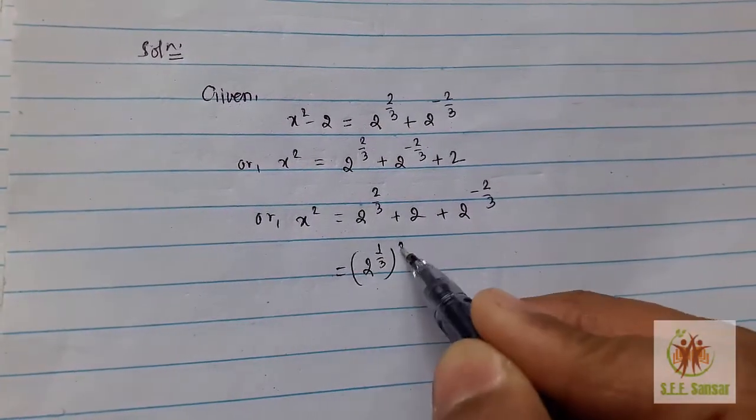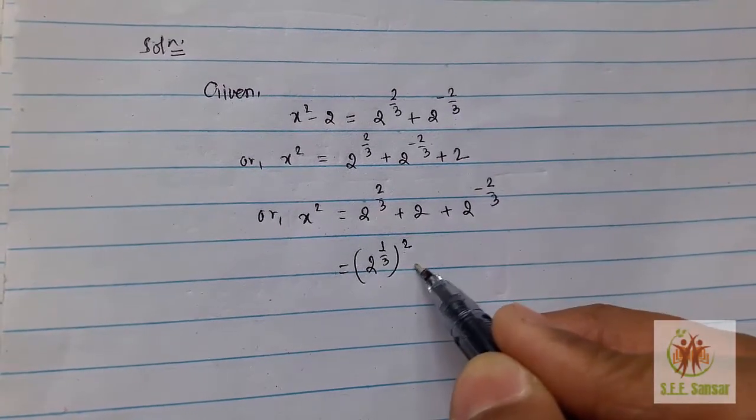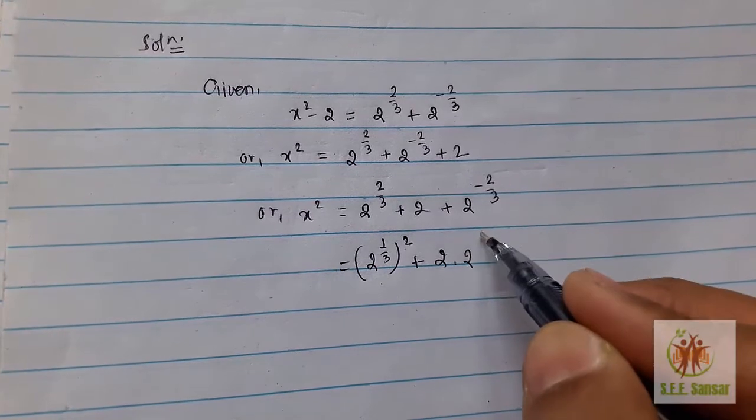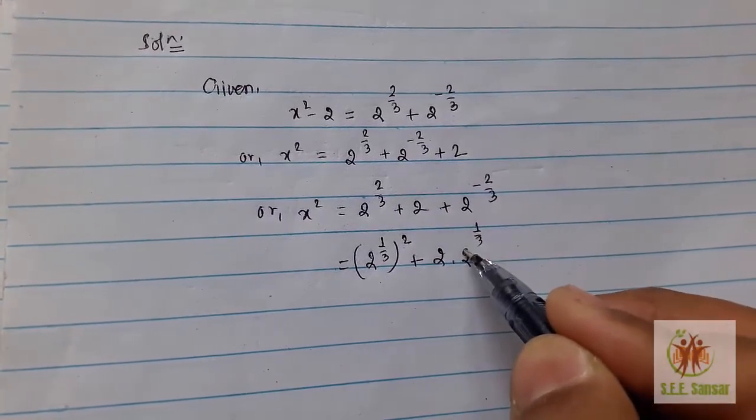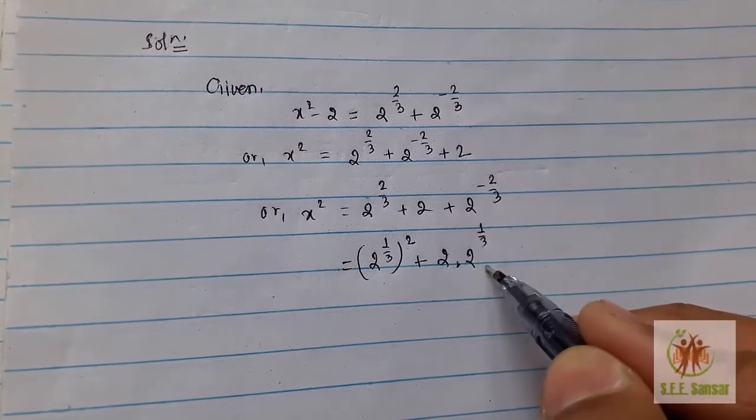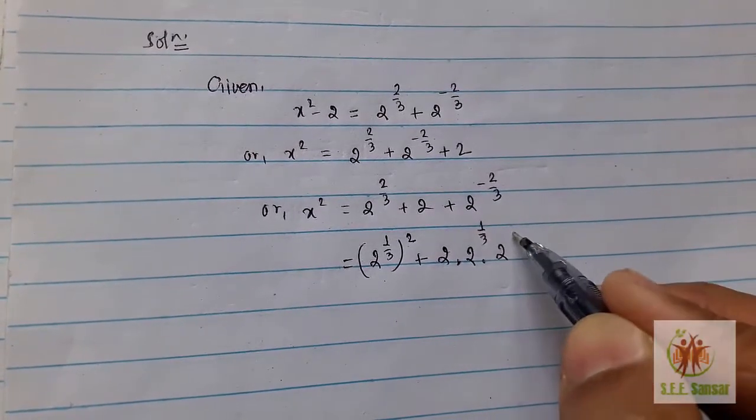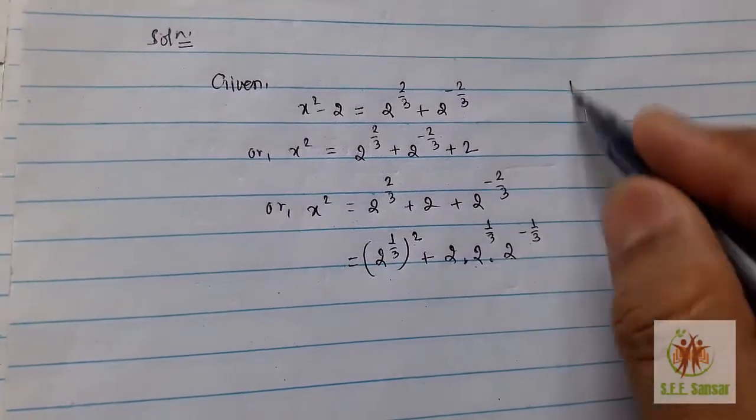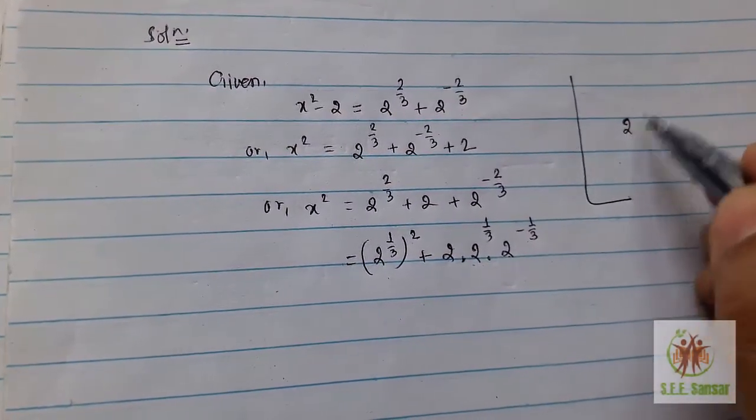So (2^(1/3))² + 2·2^(1/3)·2^(-1/3). This is 2, this is a, so we need a² here. To cancel this, we need to understand the problem. When bases are the same...